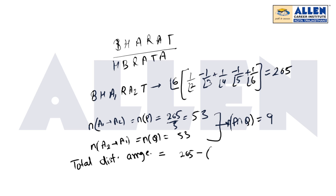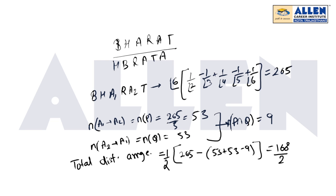265 - 53 + 53 - 9 = 265 - 9 = yeh wo saare possible cases hain jab a1 aur a2 ko maine distinct maana tha, but wo actually similar the. To unhe remove karna padega, aur main half kar dunga kyunki ye letters similar hain. So final answer: 168 ÷ 2 = 84. This is our final answer.